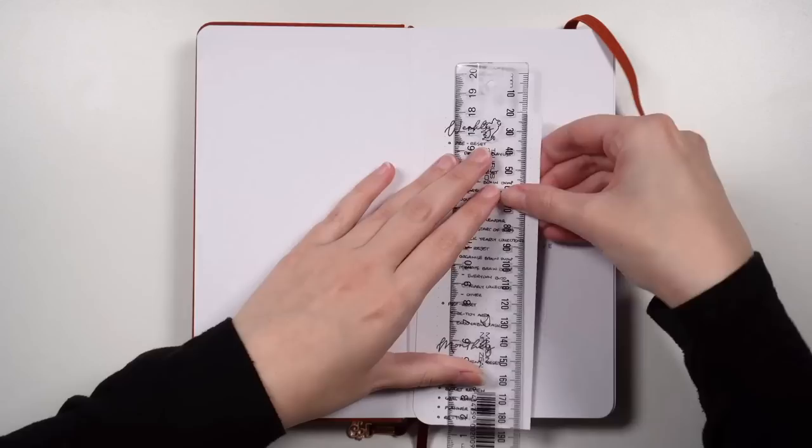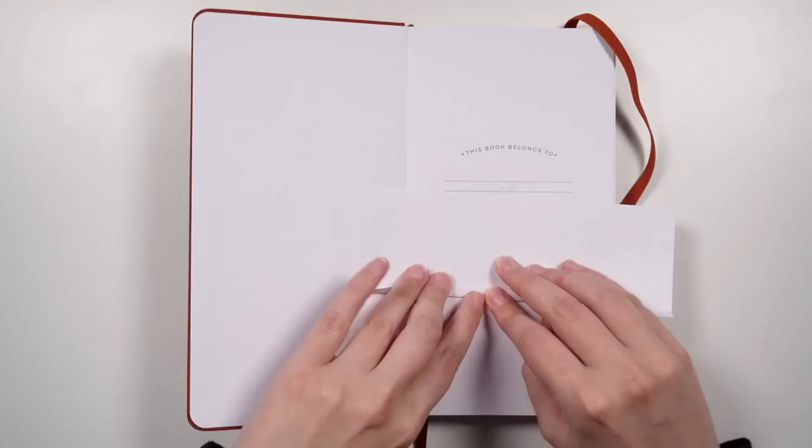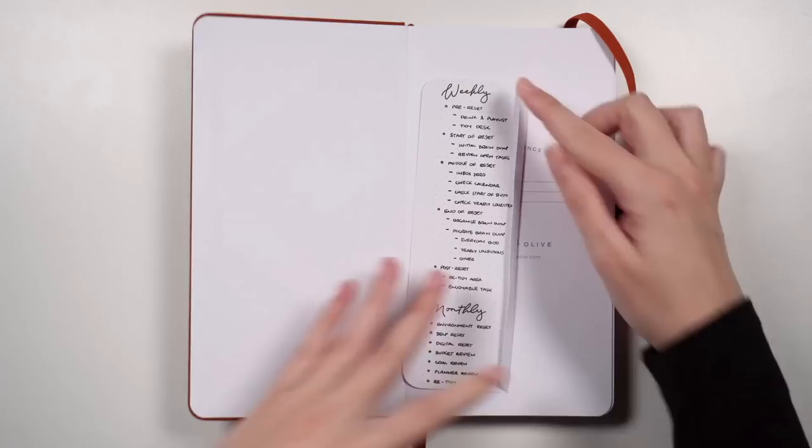To stick in my flip out, I have just used some double-sided tape and I've made sure to stick it really close to the edge of my notebook so that I can fully see all of the steps on that reset because some of them come quite close to the fold.